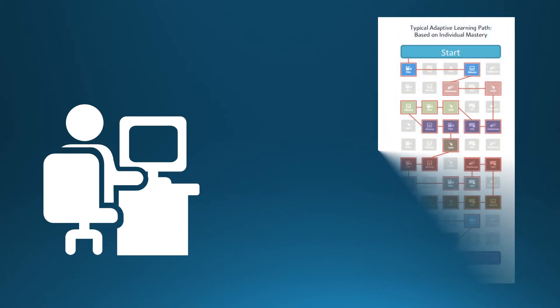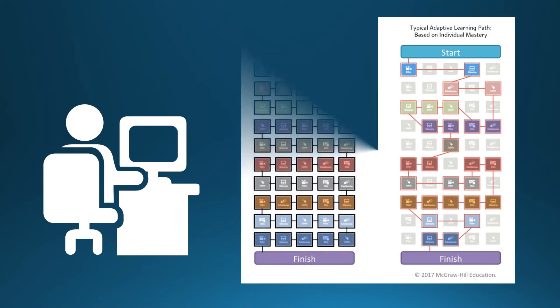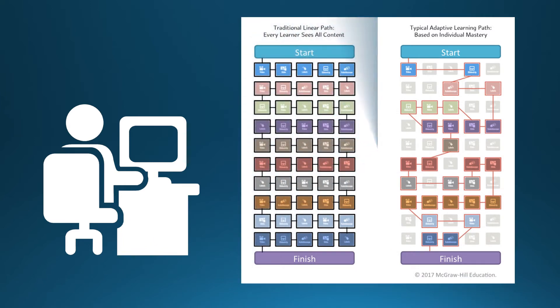By tracking responses, adaptive learning tools respond to learners' needs by changing the learning path to suit unique individual behaviors and answers. This differs from other learning tools and instructional strategies that provide one path for all learners.